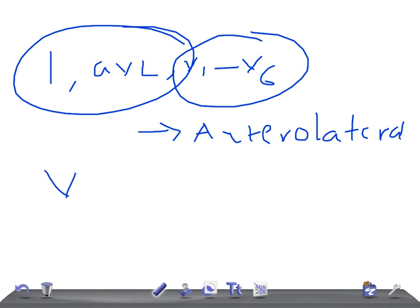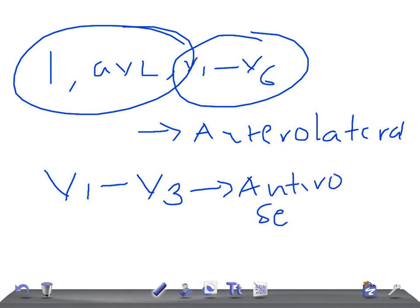If there is ST elevation in V1 to V3 — as we know V1 to V4 is anterior myocardial infarction, but V1 to V3 specifically is going to be anterior septal myocardial infarction.